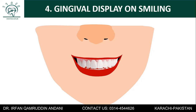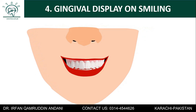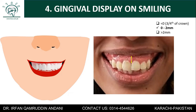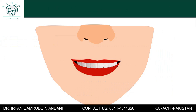The next thing you must not miss is the exposure of gums on smiling. You must measure this; the normal value of gum visibility when the patient is smiling is zero to two millimeters. In males, gum visibility is lesser compared to females, but even a female with more than two millimeters of gum visibility will definitely complain about gummy smile.